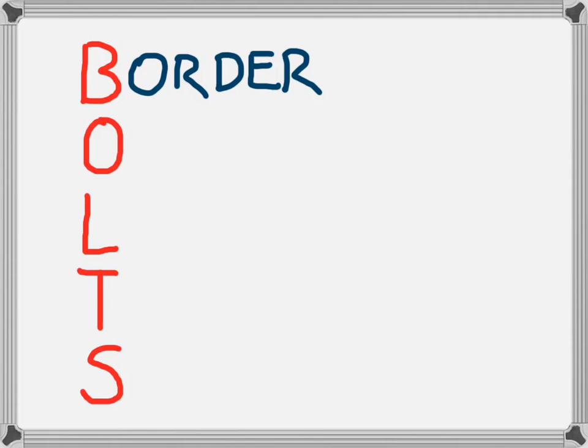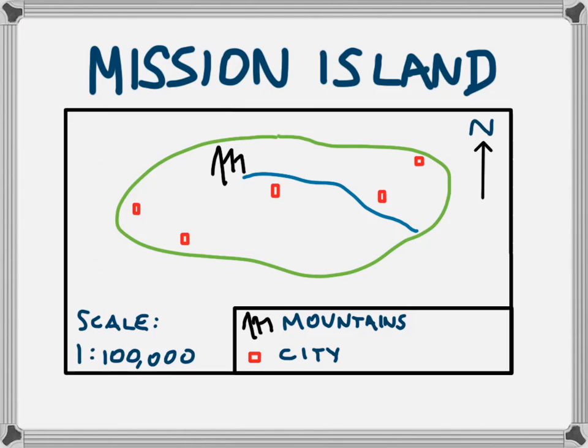The first element, B, stands for border. We can see on the map of Mission Island that we have a black rectangle there, which is the border of our map.